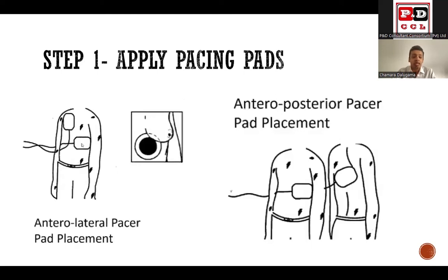Particularly in inferior MI with higher degree heart blocks, atropine might not work and isoprenaline might not give you the expected outcome. So then you may have to resort to temporary pacing. In medical wards we have two types of pacing: transcutaneous pacing and transvenous pacing. Transcutaneous pacing is something you all should be familiar with and should be able to do in an emergency setting. I'm going to discuss transcutaneous pacing in detail, and then briefly touch on transvenous pacing.